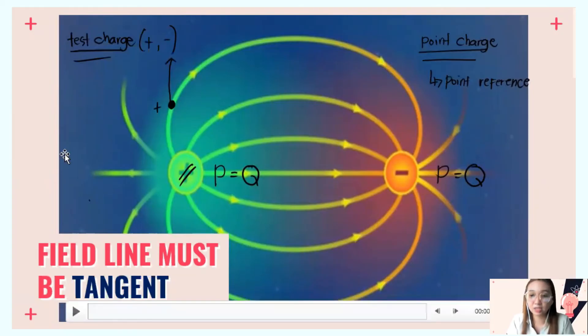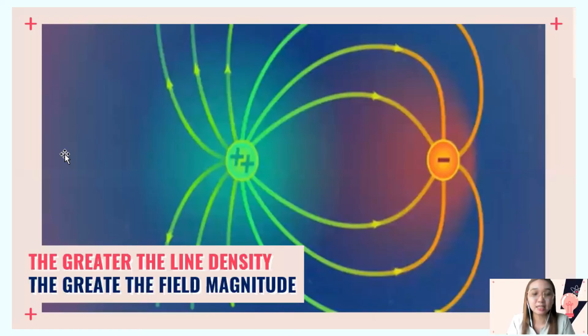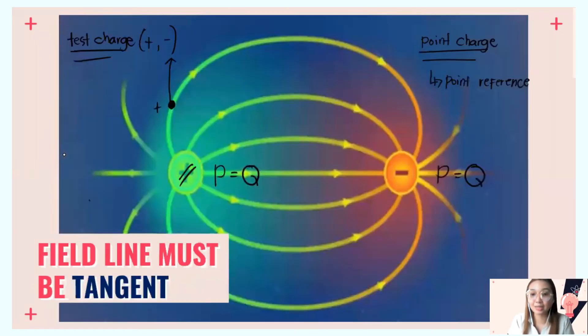Second reminder: the greater the line density, the greater the field magnitude. Here we have two protons and one electron. If we compare the amount or value of lines distributed from our charges, when the line density is larger, the field magnitude also increases. The line doubled here, so the field magnitude in this part—the diameter—is much greater.